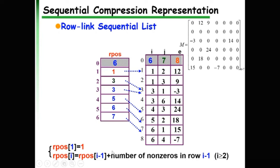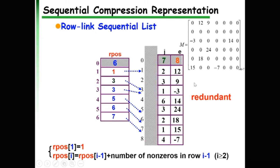One issue: the triple list already stores enough information to represent the sparse matrix, so adding the R array introduces redundant information. Actually, in this method the first column (row index) of the triple list can be omitted, resulting in what is called a row link two-couple list. The question is whether this representation can still uniquely determine the sparse matrix.